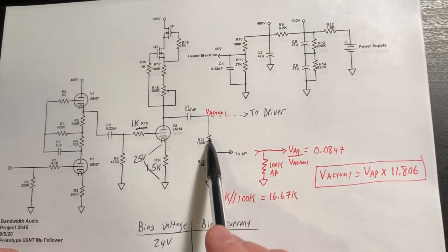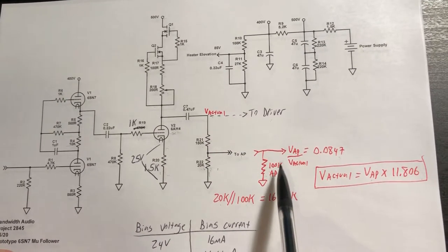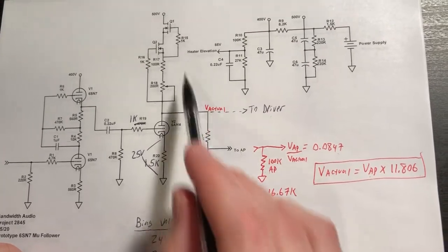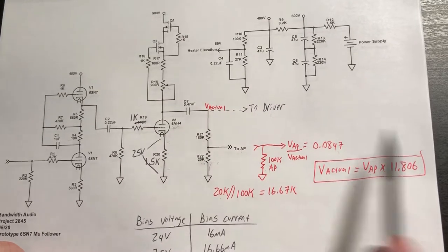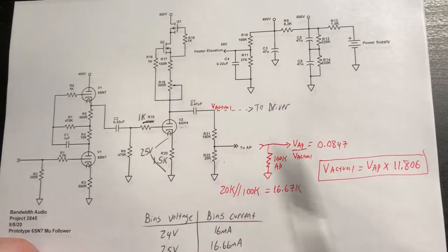And I'm actually using a voltage divider off of the AC coupling capacitor, such that I can connect my AP without loading the output of the 6AH4, and therefore loading our nice flat load line that we get from our constant current source too badly.